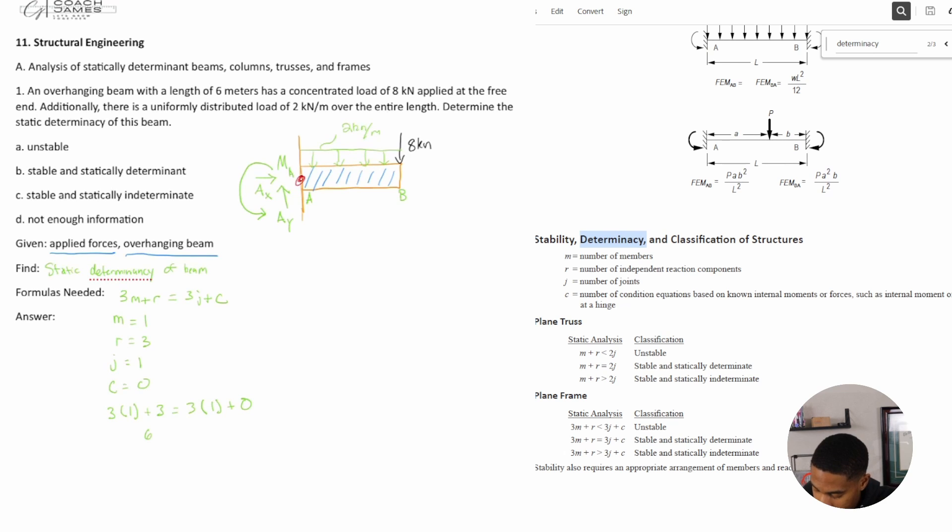Okay, so 6 is what? Greater than 3. So being that 6 is greater than 3, right, I know that I'm using this one. And so I know that it's stable and statically indeterminate. So this is going to be stable and statically indeterminate, which would be C in this case.